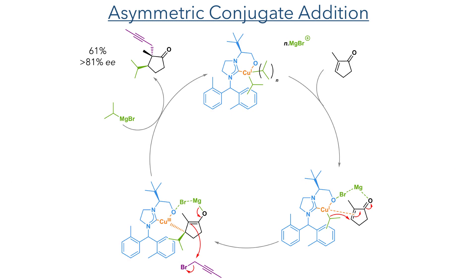It is this reagent that undergoes a conjugate addition to the enone, preferentially attacking at the beta position as organocuprates are soft nucleophiles. This forms a magnesium-stabilised enolate which is then alkylated by 1-bromo-2-butyne, forming the product with the catalyst being regenerated by further reaction with the Grignard. This formed the product in a 61% yield with greater than 81% EE.